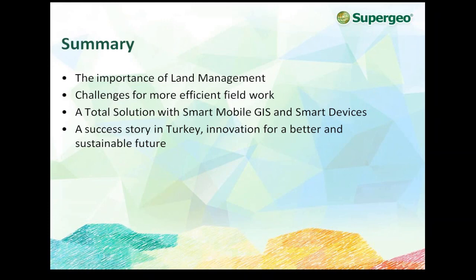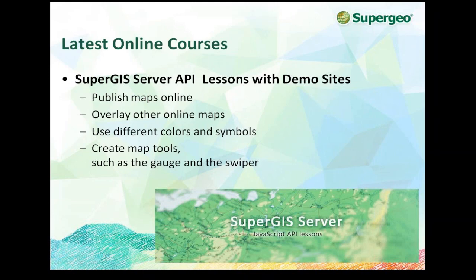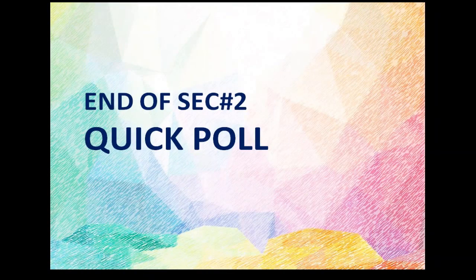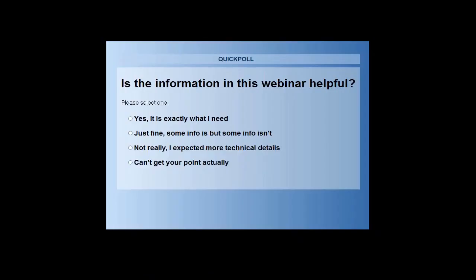It's Eugene again. I'm here to share the latest SuperGeo news with you. We are proud to show you our all-new API lessons for SuperGIS Server. You can establish fascinating web maps easily by following the tutorial step by step. The API lessons will help you understand how to publish your maps online, how to overlay your maps with other map services such as Bing Map or OpenStreetMap, how to adjust colors and symbols, and how to create helpful tools like the Gauge and the Swiper. Now let's move on to our last poll of today: do you find the information in this webinar helpful?